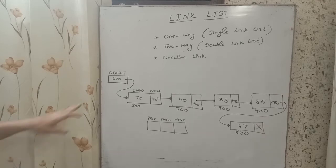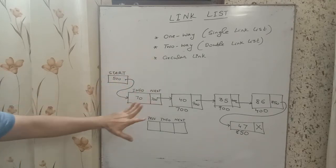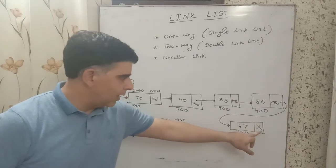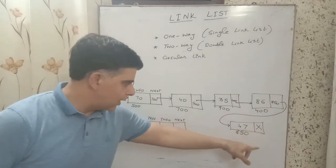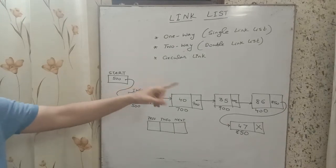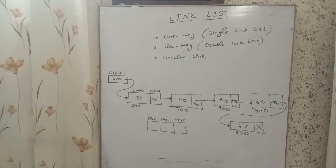The third type is a circular linked list, which is the same as a one-way linked list except that the last node's next part does not contain null — instead it contains the address of the first node again, making it like a circle. That's why it is called a circular linked list.